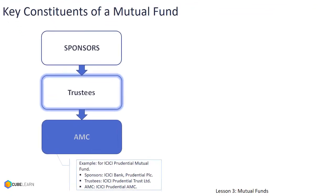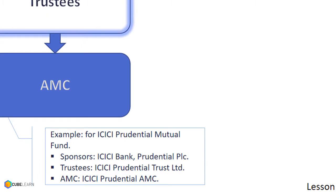In this example, for ICICI Prudential Mutual Fund, the sponsors are ICICI Bank and Prudential PLC. They have appointed trustees, which are ICICI Prudential Trust Limited, and ICICI is the AMC, or Asset Management Company, responsible for day-to-day operations of the fund.